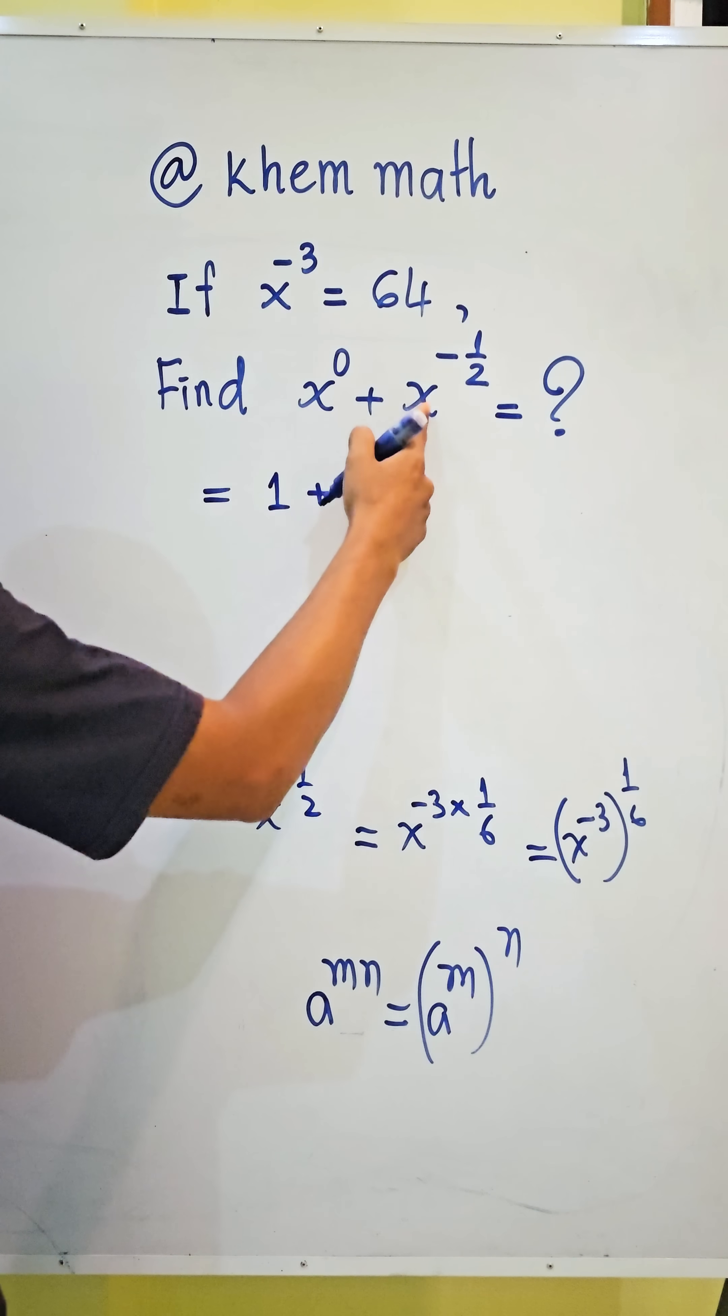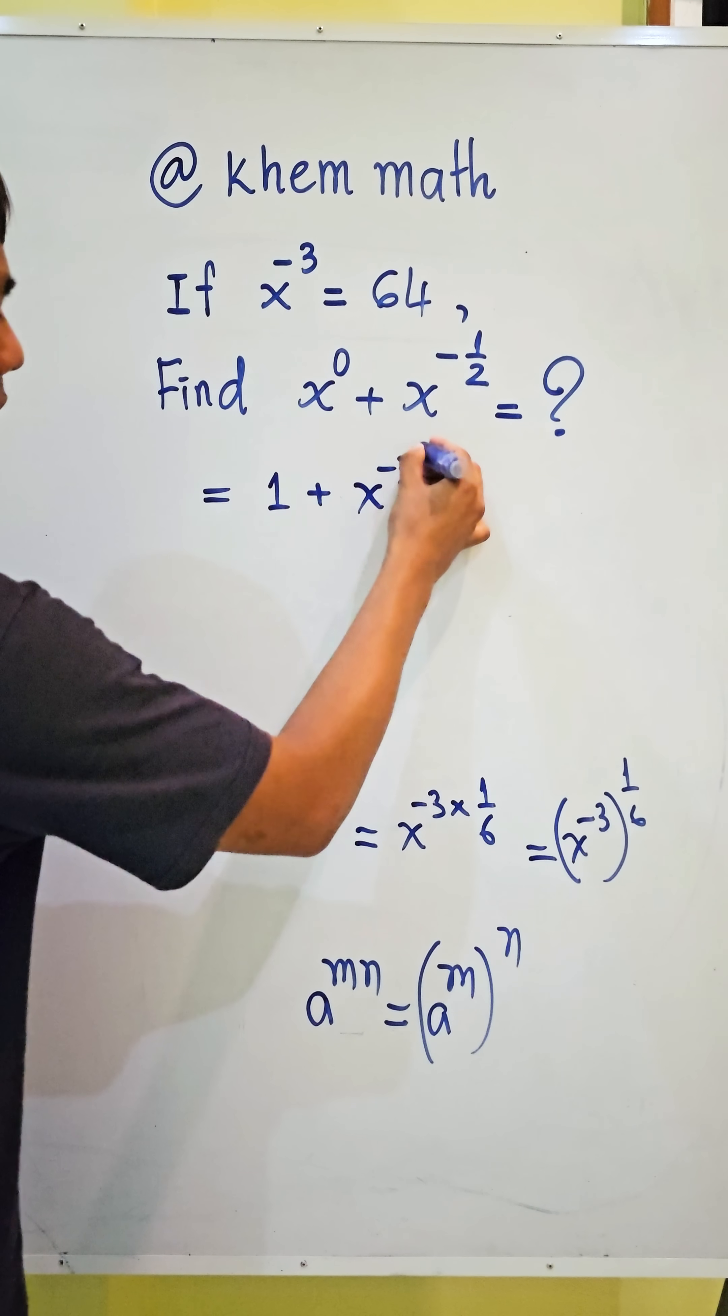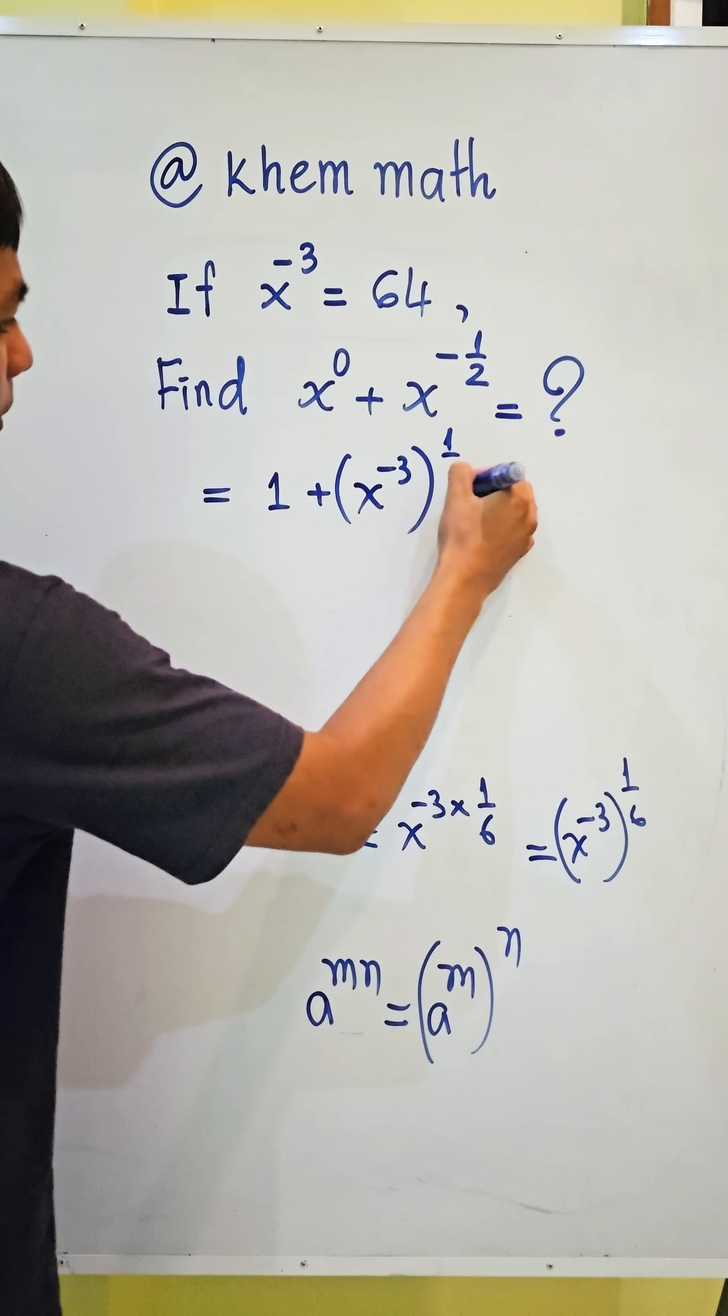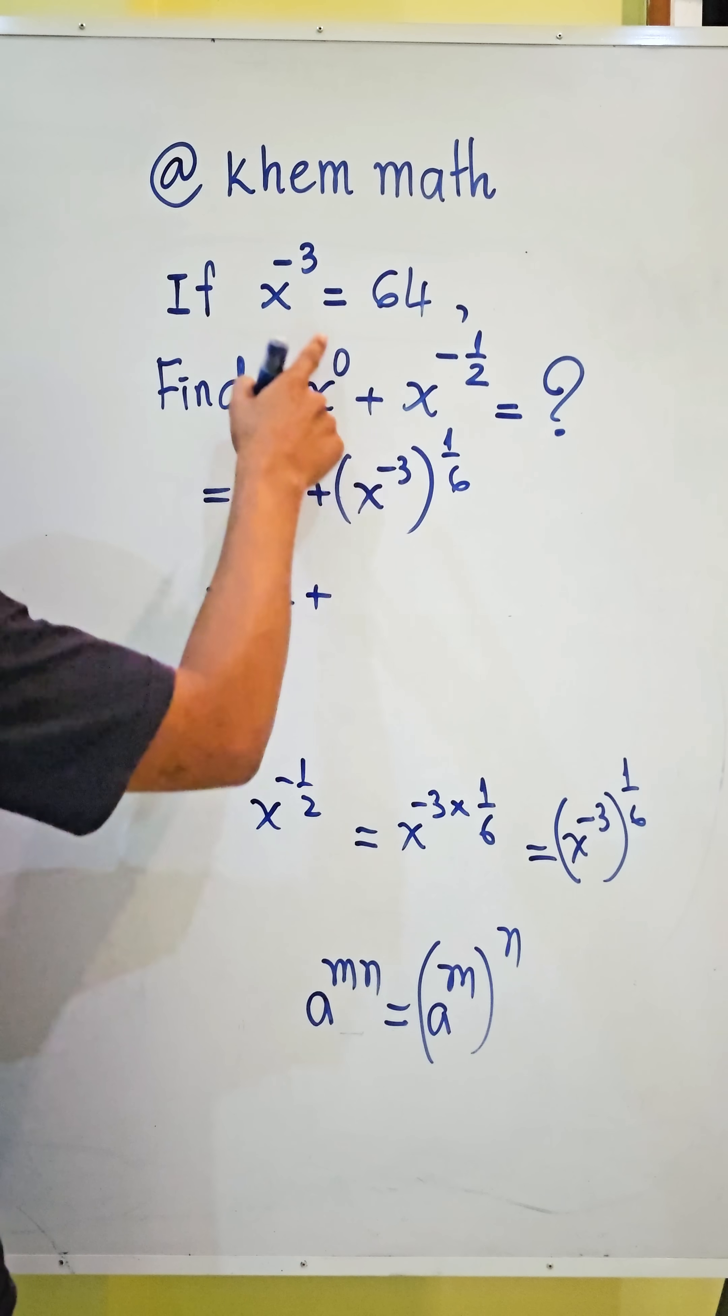Plus here we write this: x power negative 3 all power 1 divided by 6, and it equals 1 plus x power negative 3.